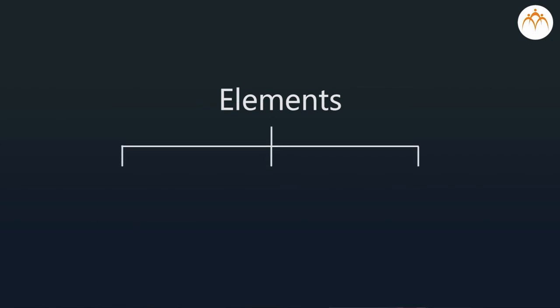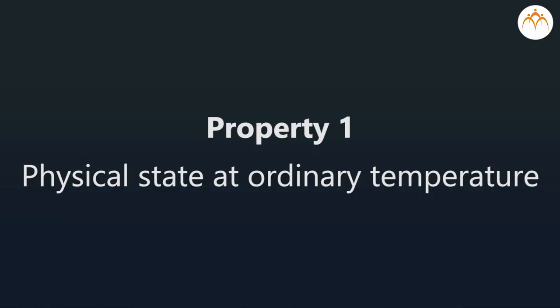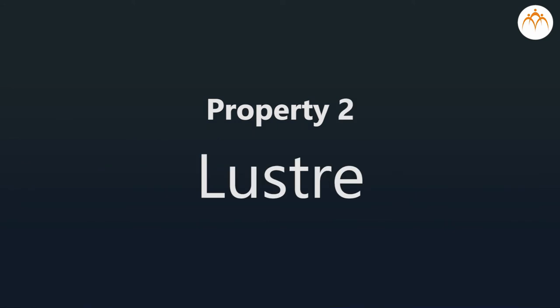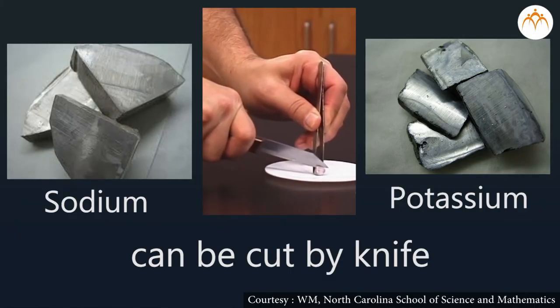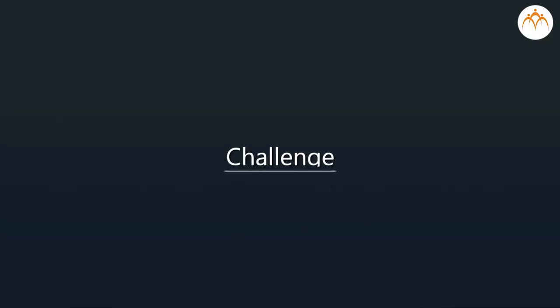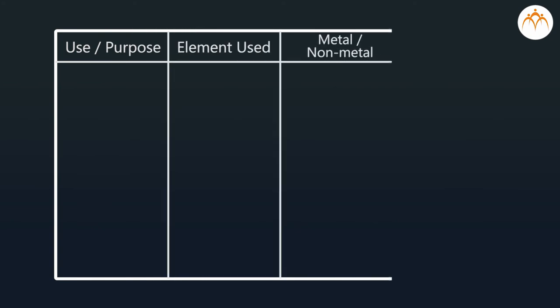Today we learnt about the physical properties that separate or classify elements into three categories — namely metals, non-metals and metalloids. We learnt about the physical properties: physical state at ordinary temperature, luster, and hardness or brittleness. We also saw that there are exceptions to the properties in these categories as well. From your surroundings, make a list of metals and non-metals used for various purposes based on their various physical properties in the following format: use or purpose, element used, metal or non-metal, and property.